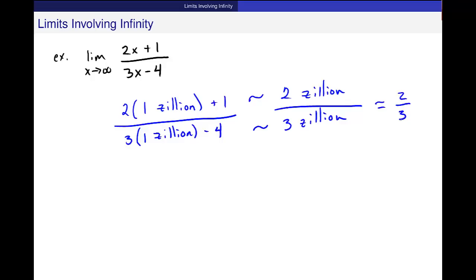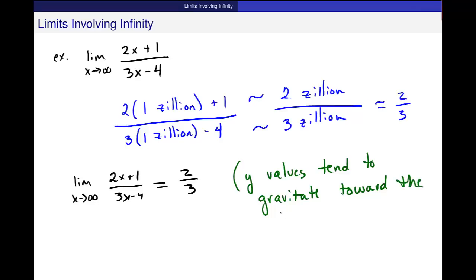So way far out, 2 zillion divided by 3 zillion tends to gravitate towards an output value of y equals 2/3. So this function, the limit as x goes to infinity of (2x + 1)/(3x - 4) is equal to 2/3. Meaning, y values or output values tend to gravitate toward the horizontal line, y is equal to 2/3. Way far out. It doesn't tell me anything about the middle of the graph, just tells me way far out behavior.